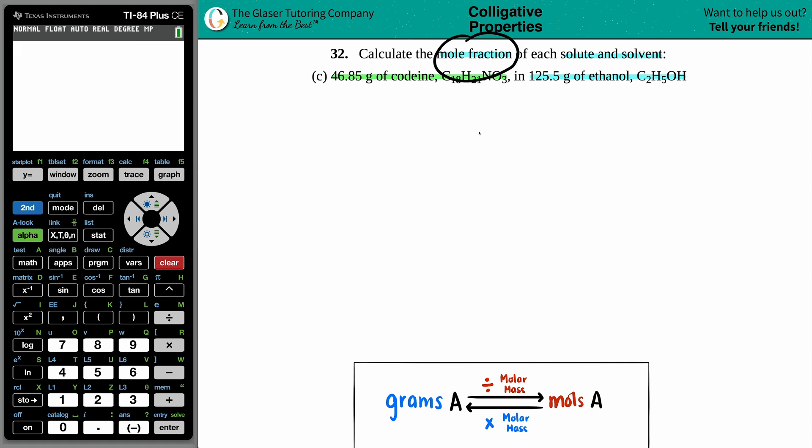Just keep in mind that the solute is always the smaller amount. Generally it's a solid that is being dunked into a solvent, the liquid component. Together, the solute and the solvent make up one happy solution.